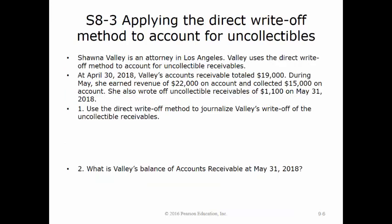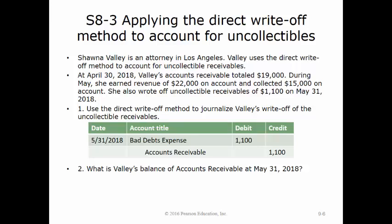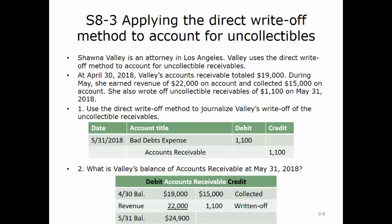In this exercise, we are going to apply the direct write-off method to account for uncollectible receivables. Shawna Valley is an attorney in Los Angeles. Valley uses the direct write-off method to account for uncollectible receivables. At April 30, 2018, Valley's accounts receivable totaled $19,000. During May, she earned revenue of $22,000 on account and collected $15,000 on account. She also wrote off uncollectable receivables of $1,100 on May 31, 2018. The first requirement is to journalize Valley's write-off: we would debit bad debts expense for $1,100 and credit accounts receivable for the same amount. After the write-off, the balance in accounts receivable is $24,900.